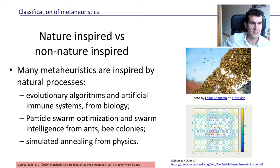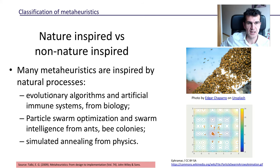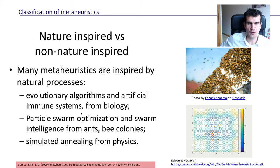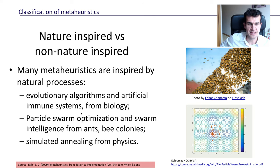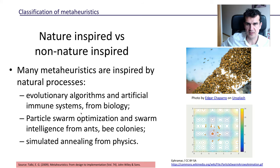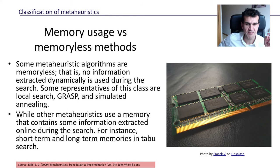There are many meta-heuristics that have been inspired by nature, usually by animal species that have been able to solve really complex problems through evolution. Some of them are evolutionary algorithms and artificial immune systems, inspired mainly from biology. There's a whole field in optimization called particle swarm optimization and swarm intelligence, and these algorithms are based on colonies of ants or bees.